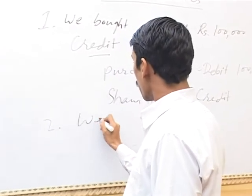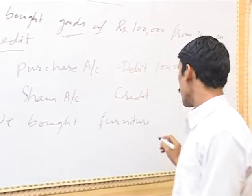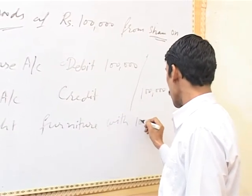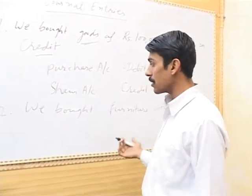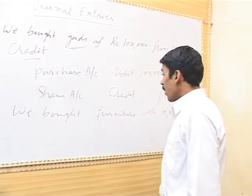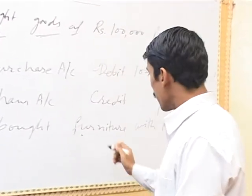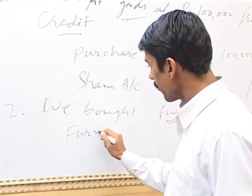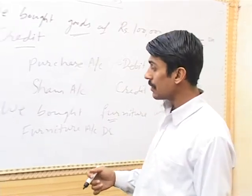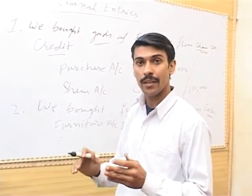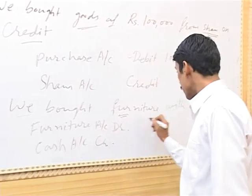One more example: we bought furniture for ten thousand rupees by paying cash. We have obtained furniture, so furniture asset will increase and cash asset will decrease. Increase in asset — Furniture account debit ten thousand. Decrease in asset is credit — Cash account credit ten thousand.